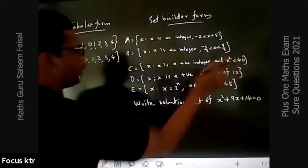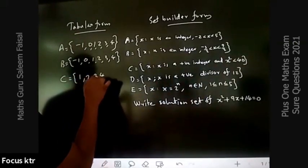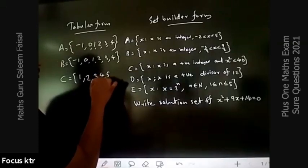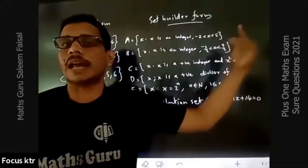1 square is 1, 2 square is 4, 3 square is 9, 4 square is 16, 5 square is 25, 6 square is 36. So the answer is {1, 2, 3, 4, 5, 6}.